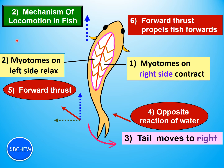After the forward thrust is produced from the left sweep, the myotomes on the right side contract while the left side relaxes. The right myotomes shorten the right side of the body and pull the tail to the right. As the tail sweeps right in the water, the opposite water reaction again produces a forward thrust and lateral thrust, propelling the fish forward.